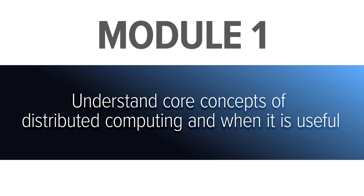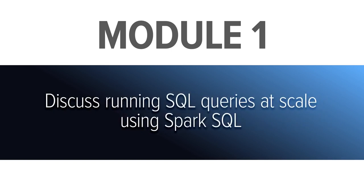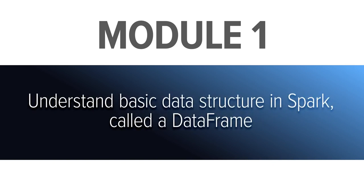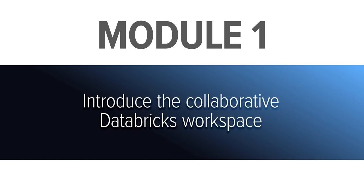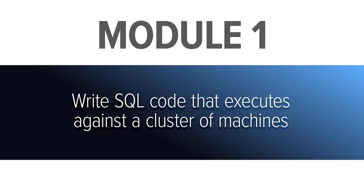In the first week, we will cover the core concepts of distributed computing and when and where it is useful. By the end of the first week, you'll be able to run your SQL queries at scale using Spark SQL. We'll also introduce the basic data structure in Spark called a data frame — a collection of data distributed across a number of machines, not just sitting on a single database or on your laptop. We'll end the module by introducing the collaborative Databricks workspace, where you'll be able to write SQL code that executes against a cluster of machines.